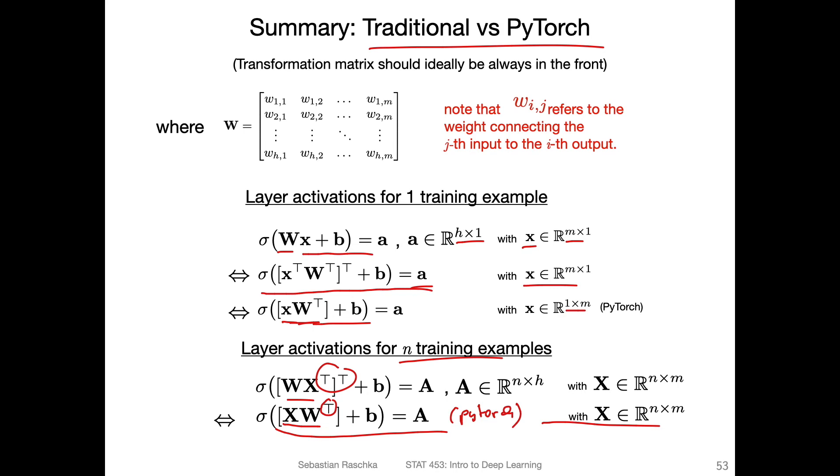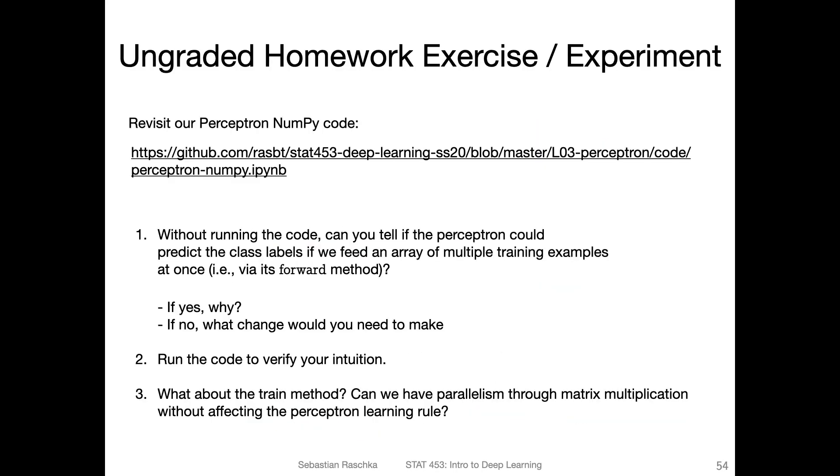Just to sum it up for this lecture. It's a little ungraded homework experiment. If you have extra time, revisit the perceptron NumPy code. Without even running the code, just thinking about it, can you tell if the perceptron could predict the class labels if we feed it an array of multiple training examples at once?